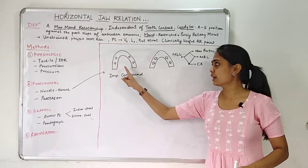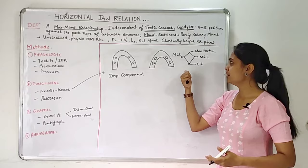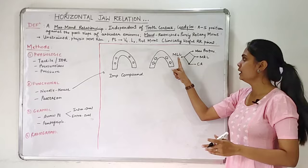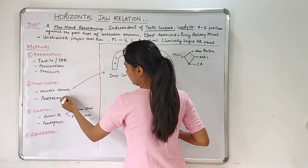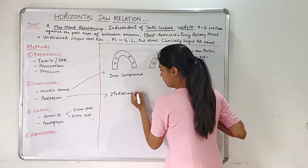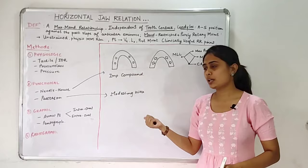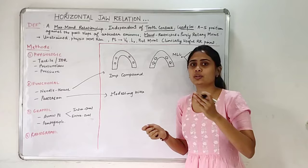Revising: four metal beads are embedded in the maxillary rim, and the corresponding mandibular rim gives us diamond-shaped points — maximum protrusion, centric relation as the most retrusive point, maximum left lateral, and maximum right lateral. Impression compound is used in the needle house method. Moving on to the Patterson method: here instead of impression compound, we use modeling wax.